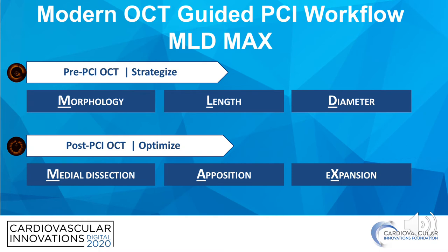We've summarized the workflow for integrating OCT into your PCI by the acronym MLDMAX. MLDMAX is broken into two phases. There's the baseline OCT, which is used to strategize your entire PCI. The M stands for morphology — you want to identify lesion morphology. Next, you determine the length of the lesion, which determines the stent length you choose. Lastly, for the pre-PCI OCT, D is for diameter, used for choosing stent diameter as well as the post-dilatation balloon diameter.